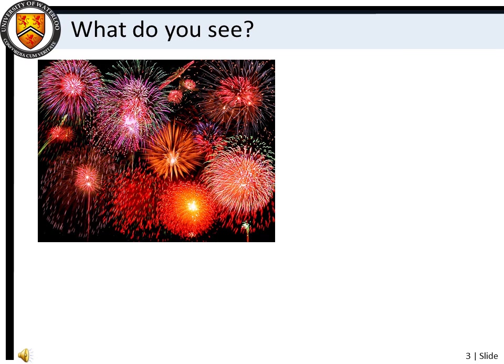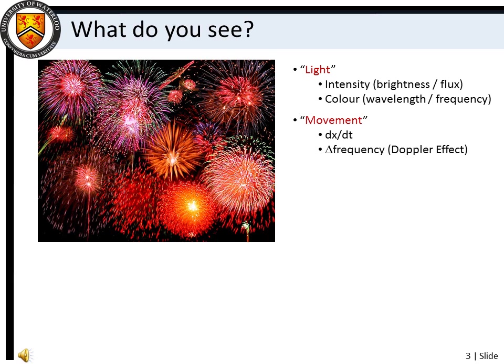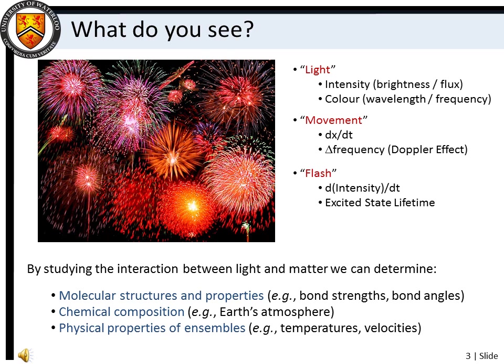Spectroscopy may be broadly defined as the study of how light and matter interact. An important question we should ask ourselves is: what do we see, since the observation and interpretation of light signals is the essence of spectroscopy. If we take fireworks as an example, we quite obviously see light, which we can characterize in terms of its intensity and color. We also see that our light signals change in position and intensity as a function of time. Observations like these can provide a great deal of information about the chemical and physical properties of matter.